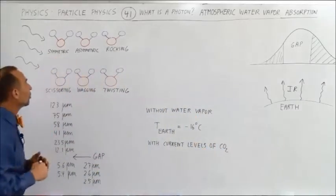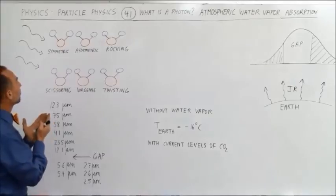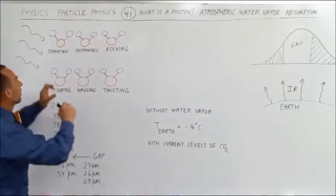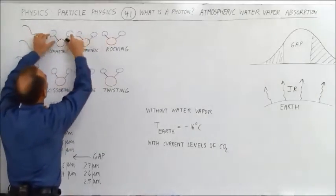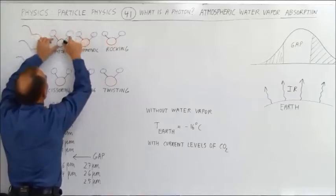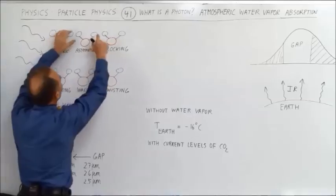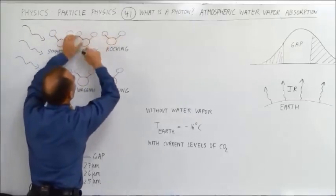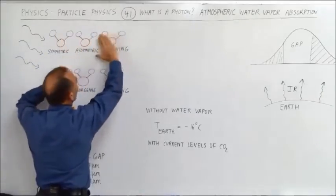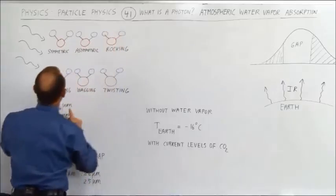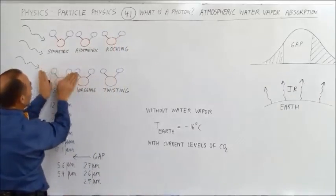The different vibrational modes for water molecules in the atmosphere is what we call the symmetric vibration, which is where the hydrogen molecules can go back and forth like this between the oxygen, getting closer and farther away from the oxygen. Asymmetric means that it can vibrate like this, rocking means that the molecule can rock back and forth like this, scissoring means that the molecule can vibrate back and forth like this.